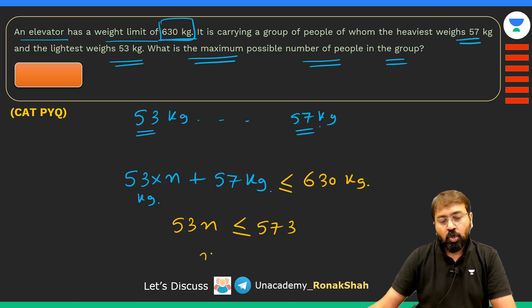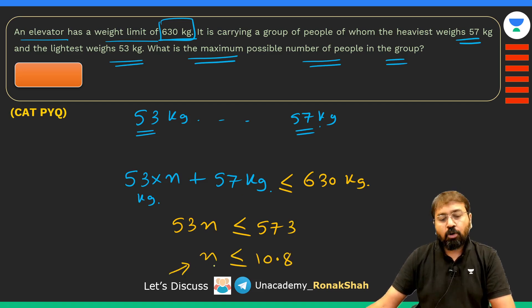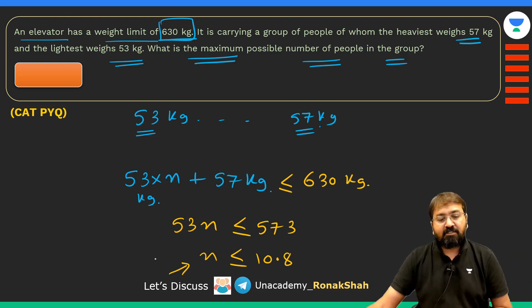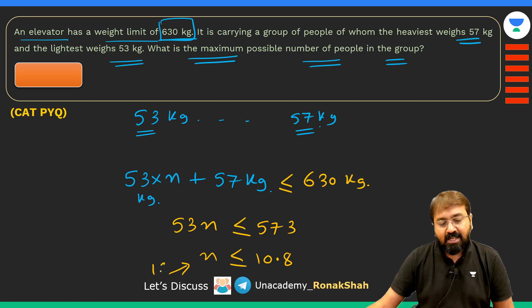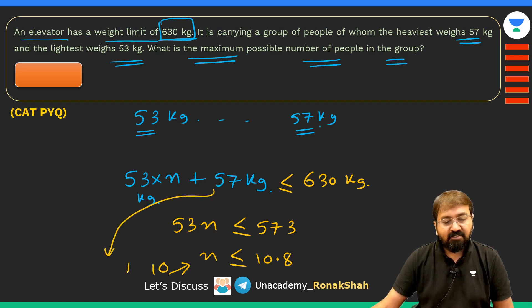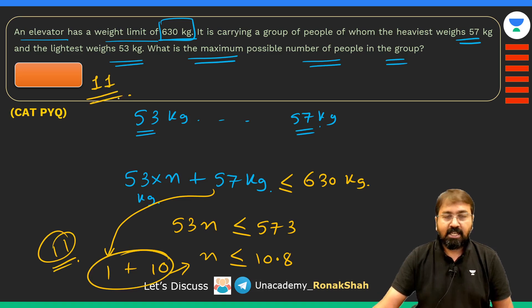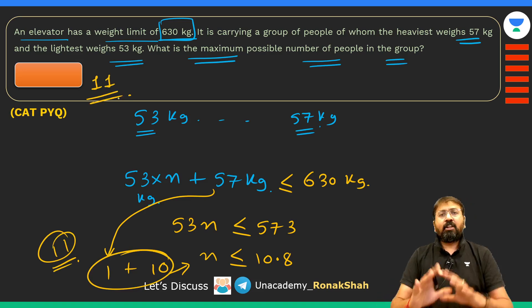Setting up the inequality: 53n ≤ 630−57 = 573, so n ≤ 573÷53 ≈ 10.8. Therefore n = 10 people at 53 kg, plus one person at 57 kg, gives a maximum of 11 people in the elevator.